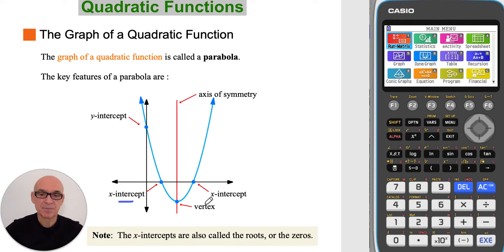Its x-intercepts, where the graph crosses the x-axis. Its vertex, which will either be a minimum or a maximum point. And its axis of symmetry, and the graph is symmetrical on either side of this line. The x-intercepts are also called the roots, or the zeros.